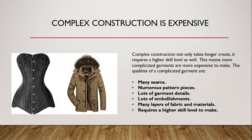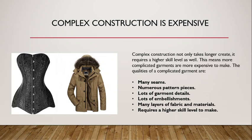Complex garments have many seams, numerous pattern pieces, and lots of garment details — all kinds of different pockets, boning, clasps, things like that. They have lots of embellishments: embroidery, beading, complex printing. They'll have many layers of fabric and material. On this jacket, for example, we have trims, a shell, probably an inner lining, and material in between to create insulation. The corset has an outer shell of a lovely black silk jacquard, probably an inner lining, and boning and stiffening agents on the inside.